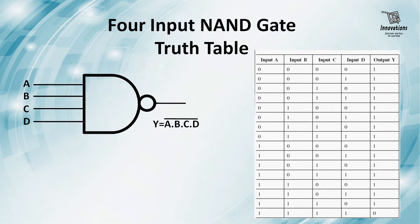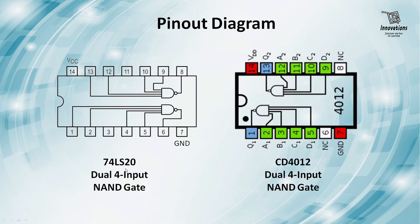Now we will see the pinout diagram of the two ICs we are going to test today. For the 7420 IC we can see the two NAND gates. For gate 1, pin numbers 1, 2, 4, 5 are inputs, pin number 6 is the output, pin number 3 is no connection, and pin number 7 is ground. For gate 2, pin numbers 9, 10, 12, 13 are input pins, pin number 8 is the output, pin number 11 is no connection, and pin number 14 is the positive power supply pin.